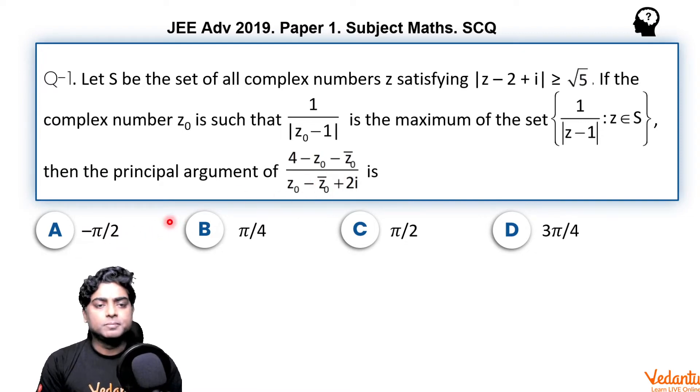So they are asking about the argument of this expression. The options given are: a) minus pi by 2, b) pi by 4, c) pi by 2, d) 3 pi by 4. Let's see how we can solve this question. If you simplify this expression, you will find the question is a level 1.